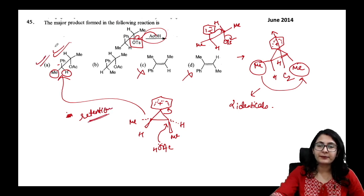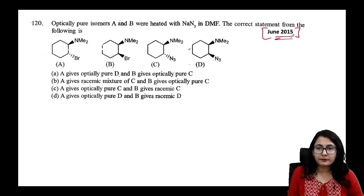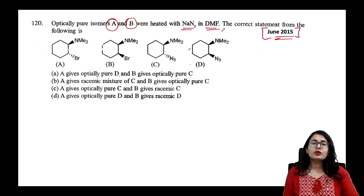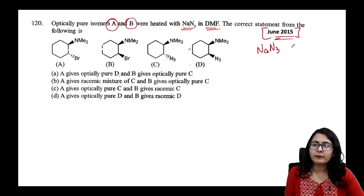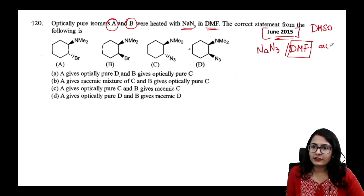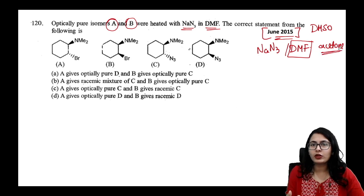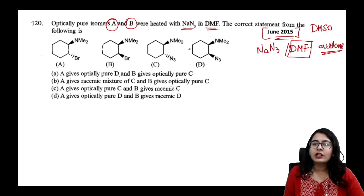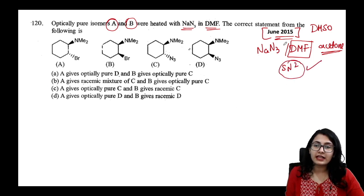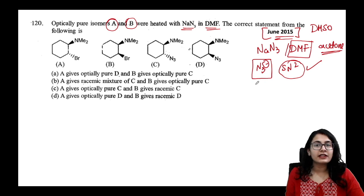The final product is a retention product, so the answer is option A. Moving on — a June 2015 question: optically pure isomers A and B were heated with sodium azide in DMF. Whenever you see DMF, DMSO, or acetone — polar aprotic solvents — they are excellent for SN2. Azide (N3⁻) is a polarizable, very good nucleophile, so this is a simple SN2 reaction.